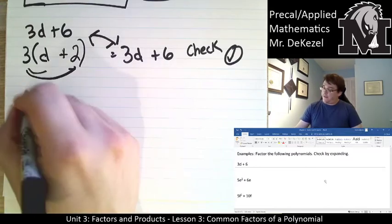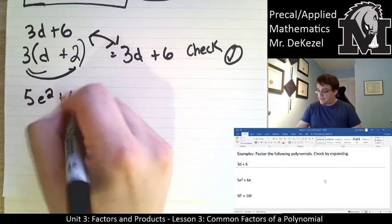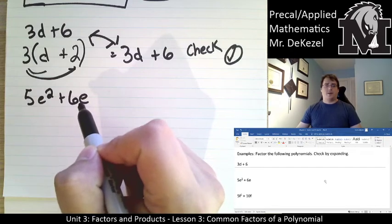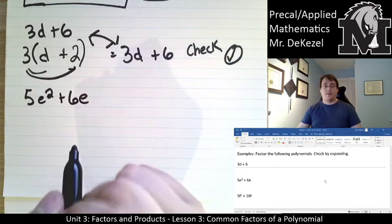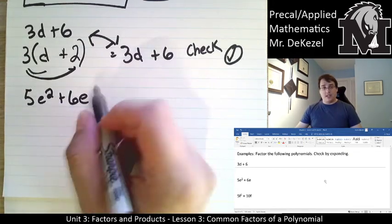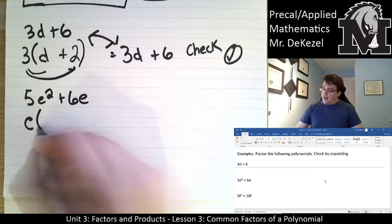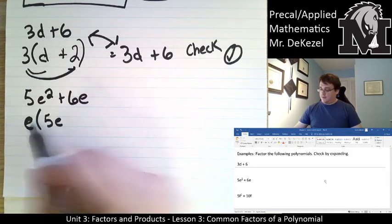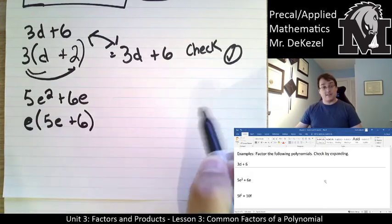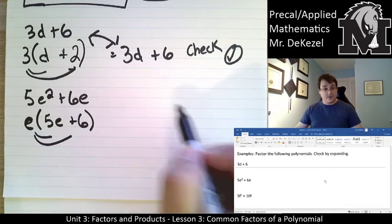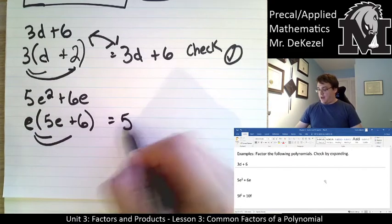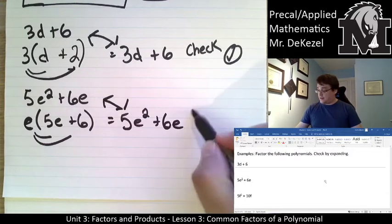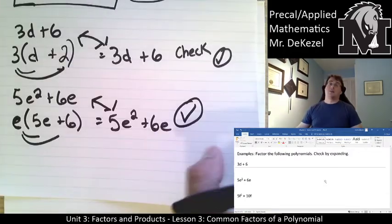Next: 5e squared plus 6e. The numbers don't share a common factor other than 1, but both terms have at least one e. So let's factor that out: e times (5e plus 6). What times e gets me 5e squared? That's 5e. What times e gets me 6e? That's 6. Check: e times 5e equals 5e squared, and e times 6 is 6e. Those are correct, so I have factored it properly.